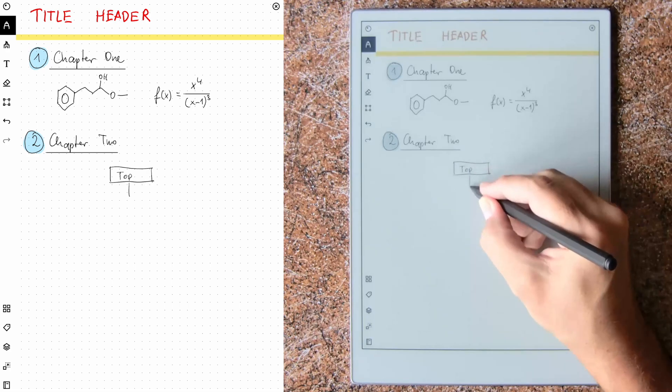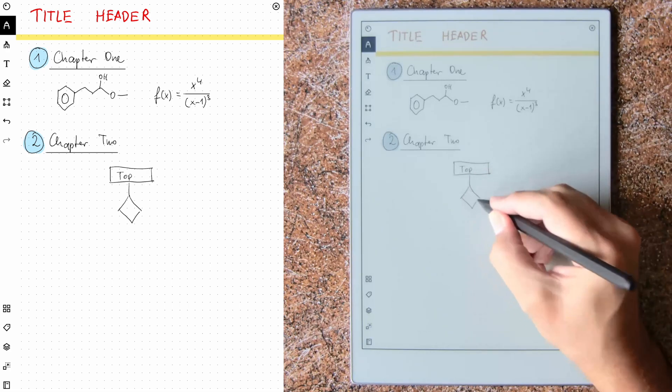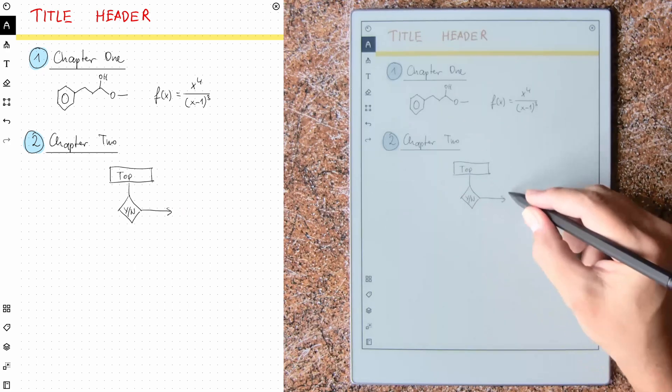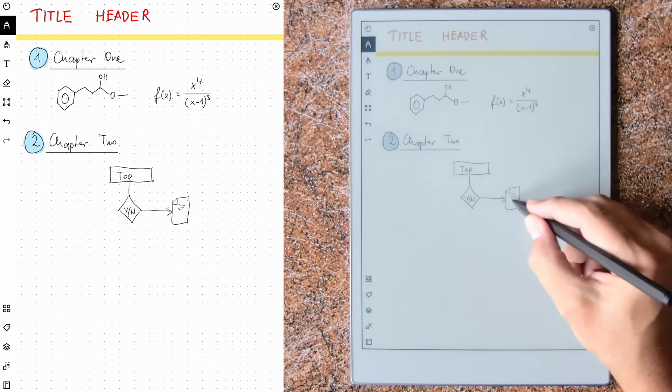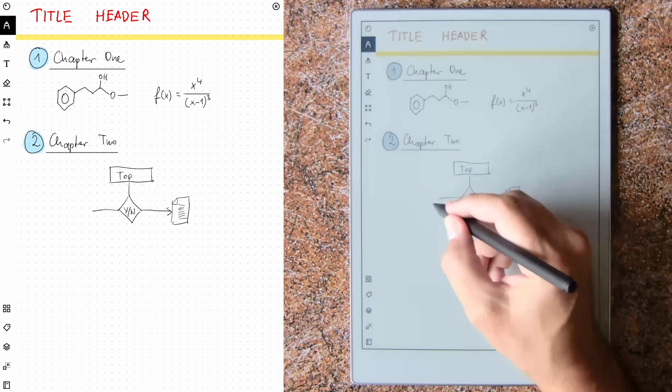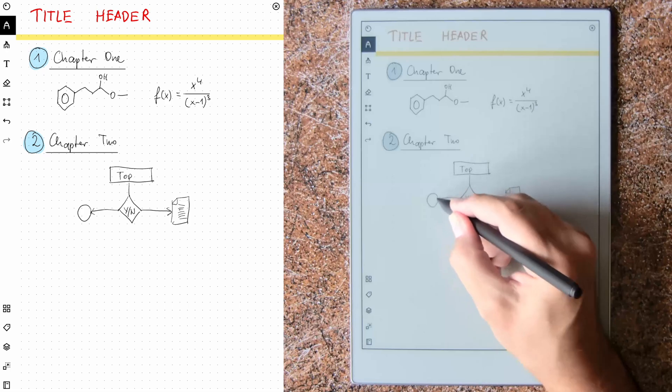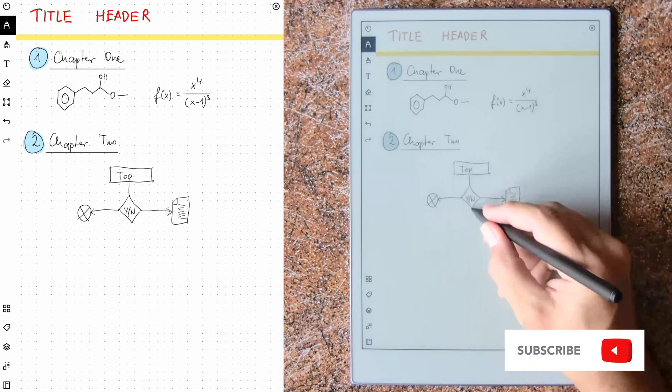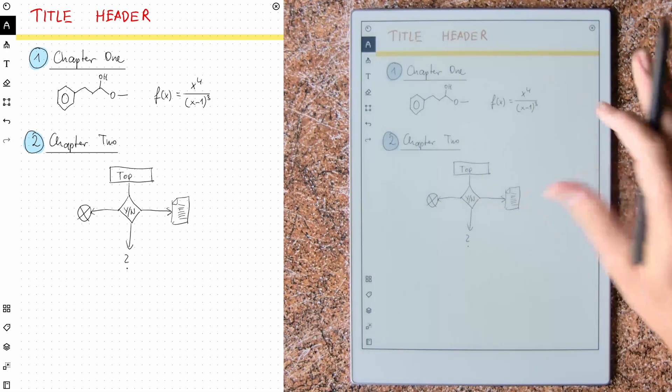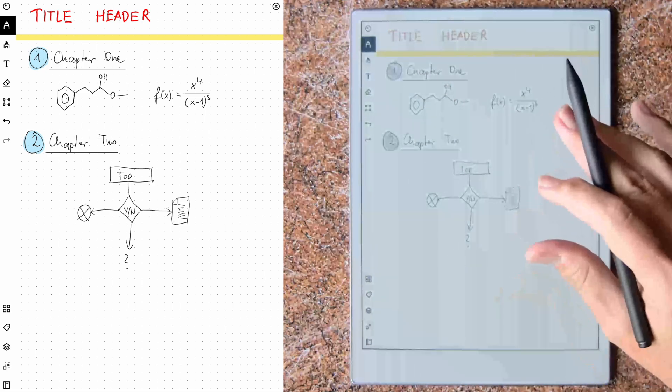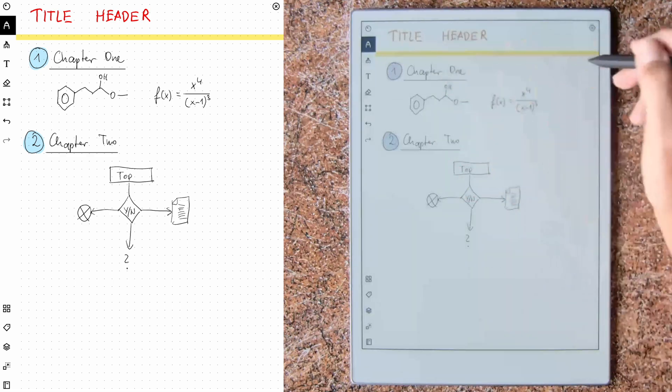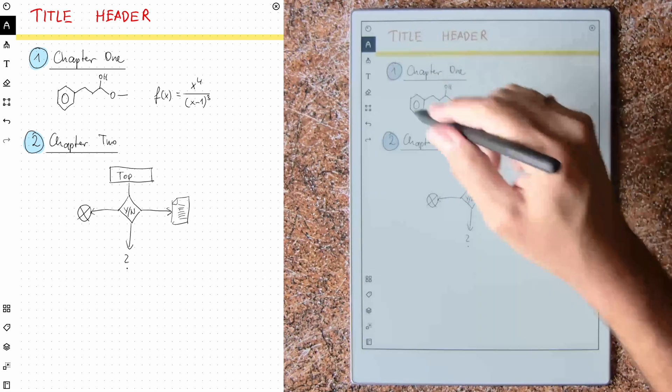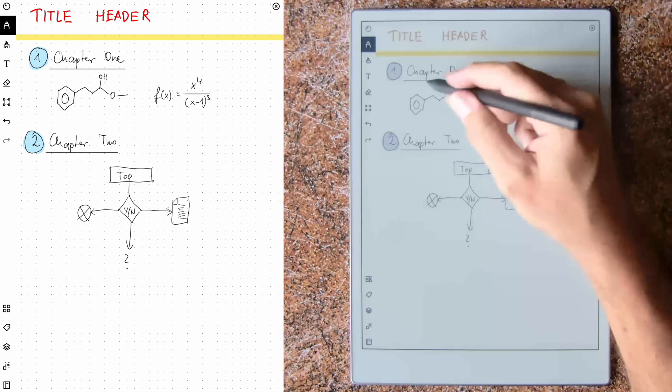Let's create a diagram. I do this now very quickly. Top. And some decision. Say yes, no. And we can go left. Here we have a document. And here we have maybe, I don't know, here we have an end point of the flow. And here we have whatever, I don't know.